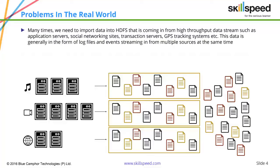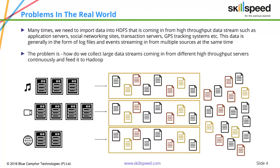That is exactly what Flume is going to do. The data we are concerned with includes things such as log files, event streams, etc. The real problem is how we collect large data streams coming in from different high-throughput servers continuously and feed it into Hadoop. For example, imagine you want to pull all tweets about Barack Obama today and dump them into Hadoop. The first problem is that we need an efficient system to search and categorize the feed, and then it should be continuously transported into Hadoop.